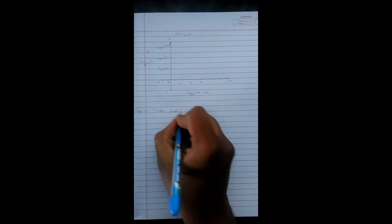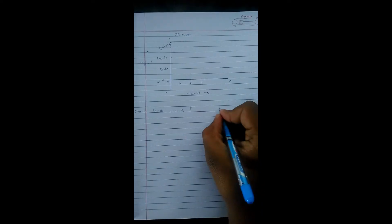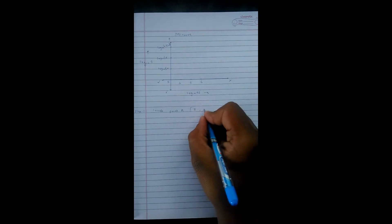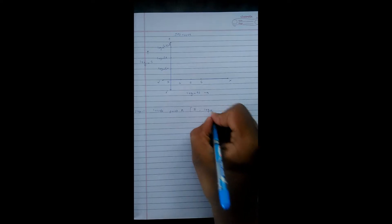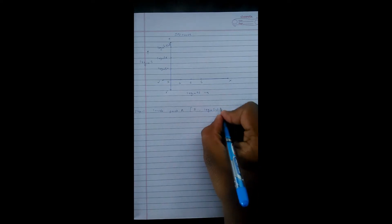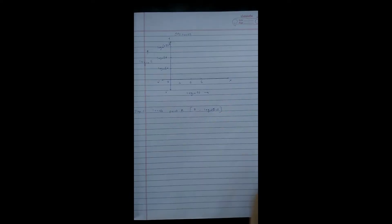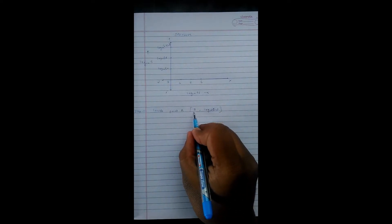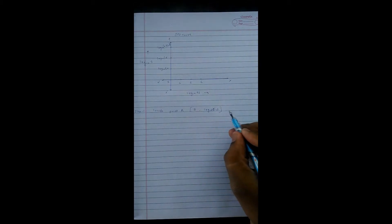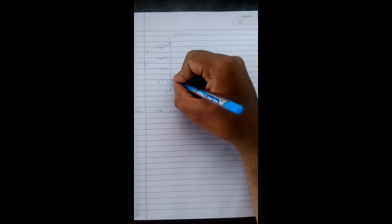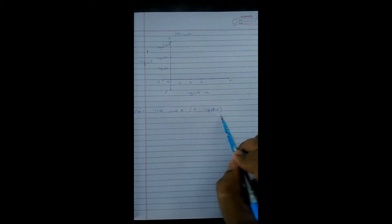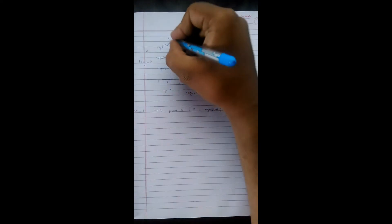Locate point A at 3, log to the base 10 0.9 Sut. Three means the scale on x-axis and log to the base 10 Sut indicates scale on y-axis. Three is here and log to the base 10 0.9 Sut is here, means we have to locate point A here.